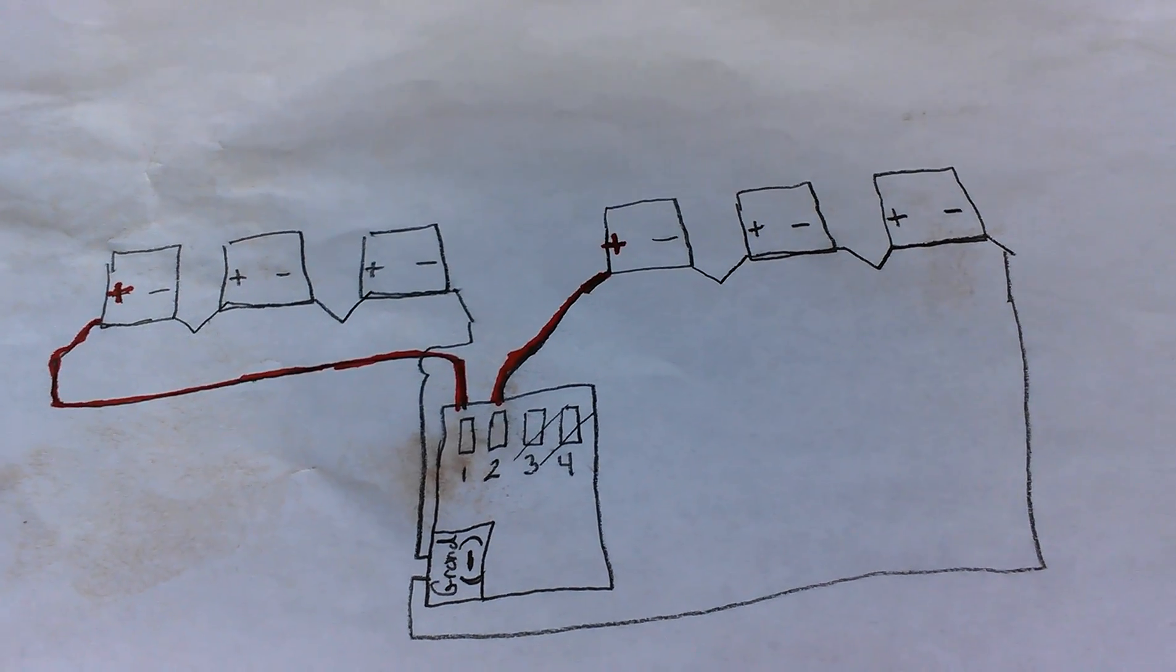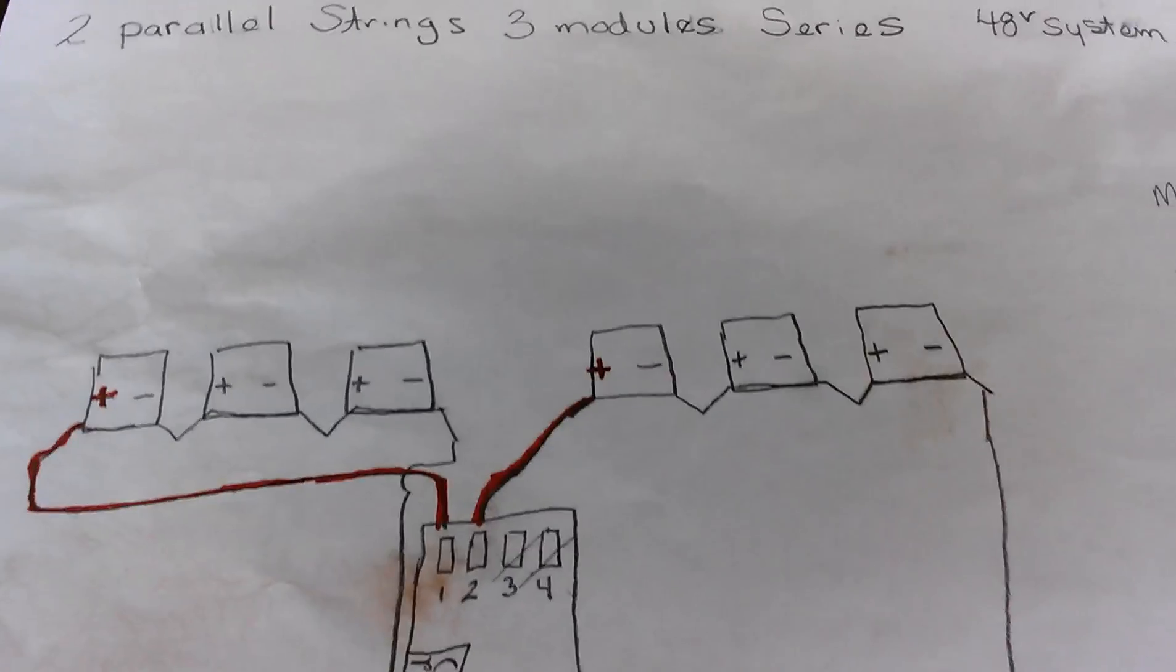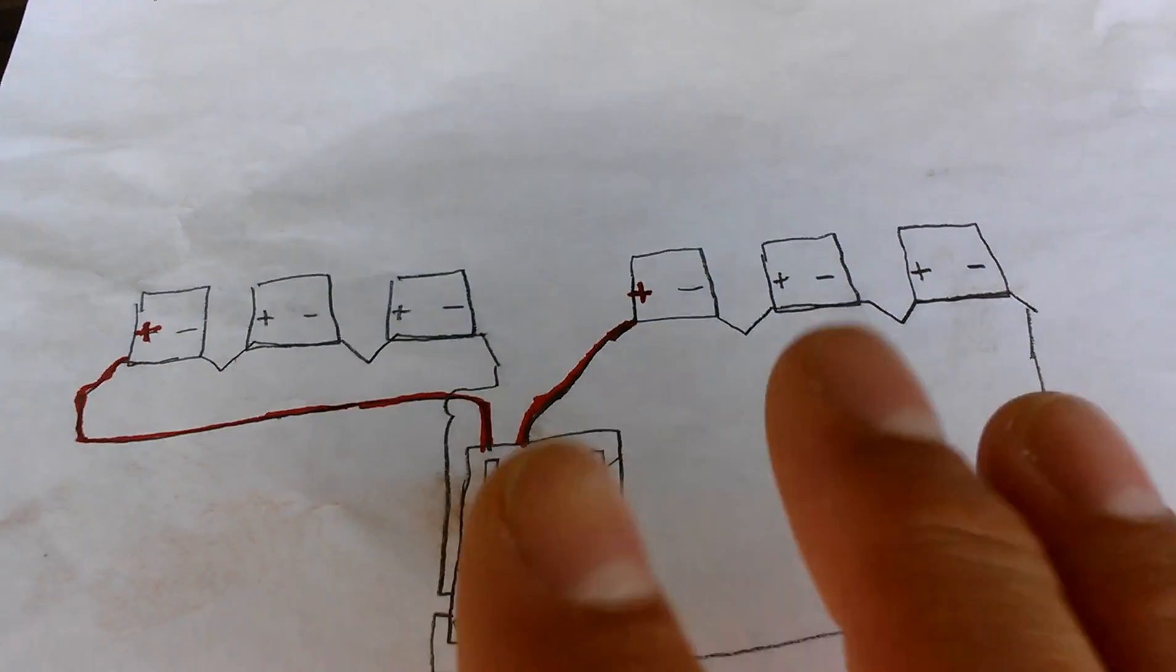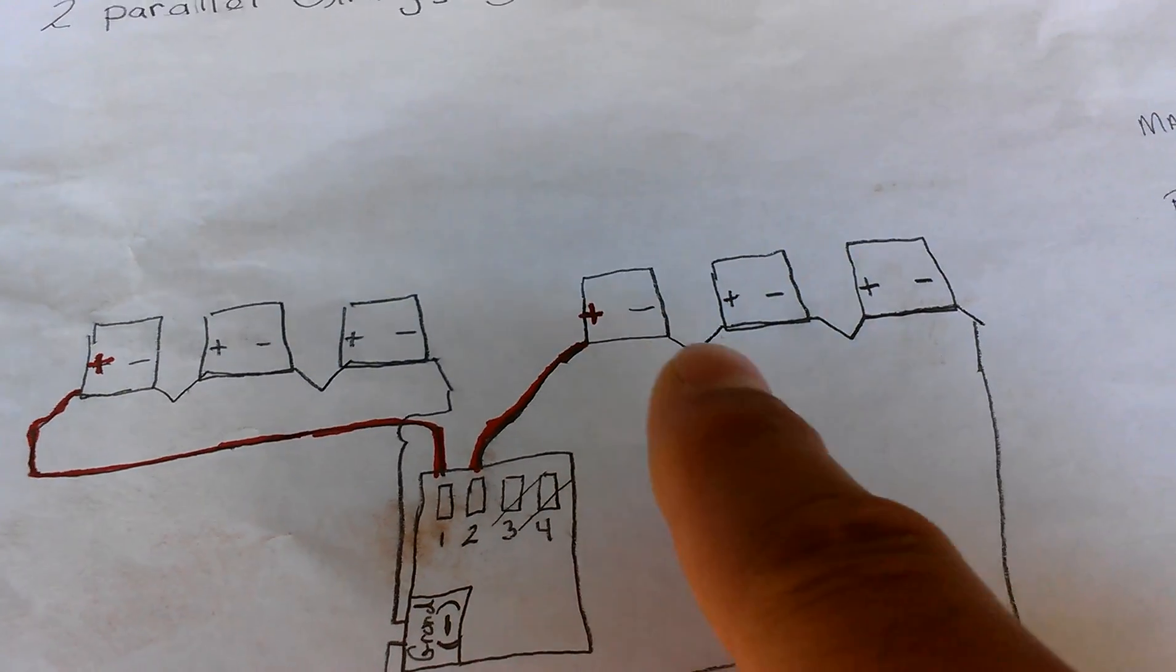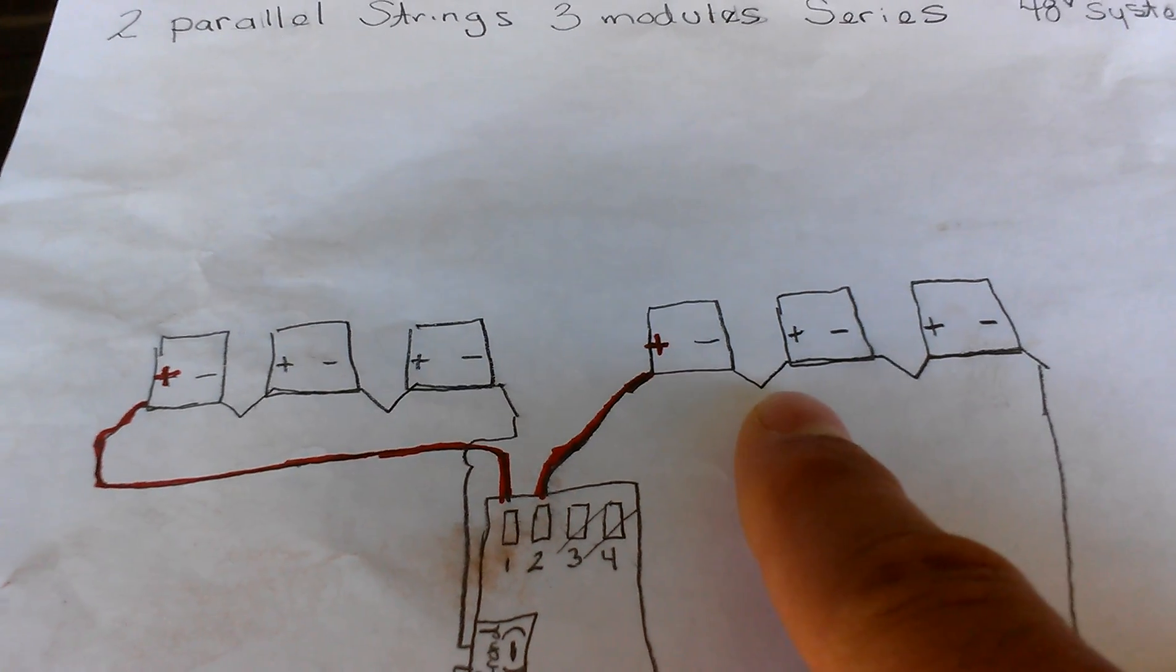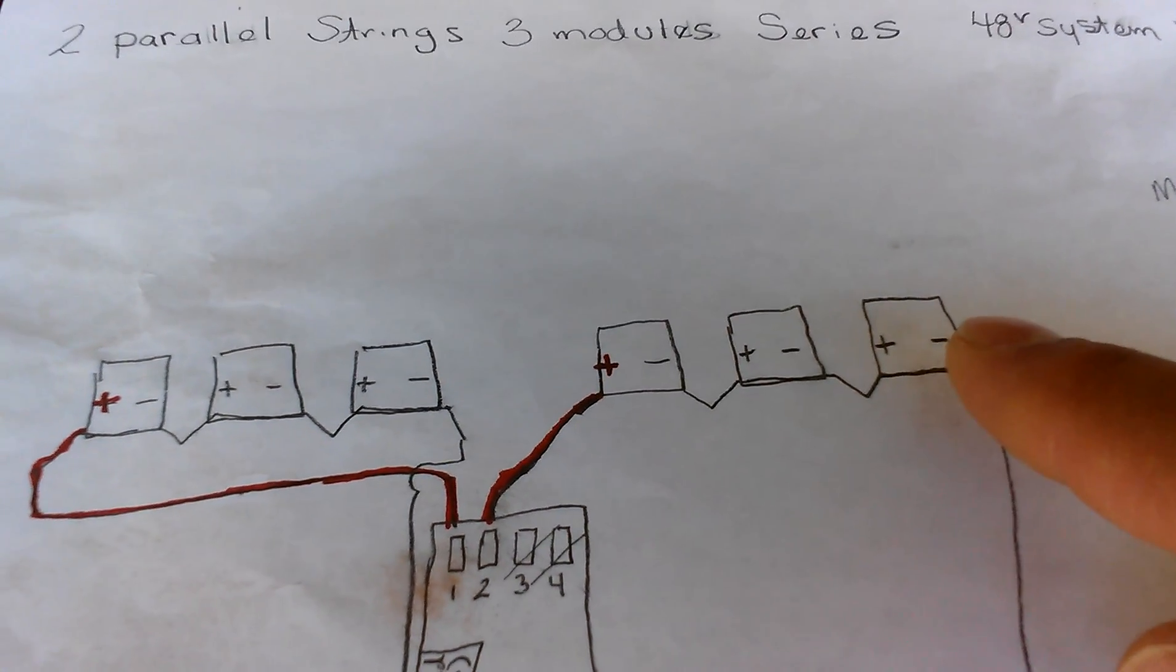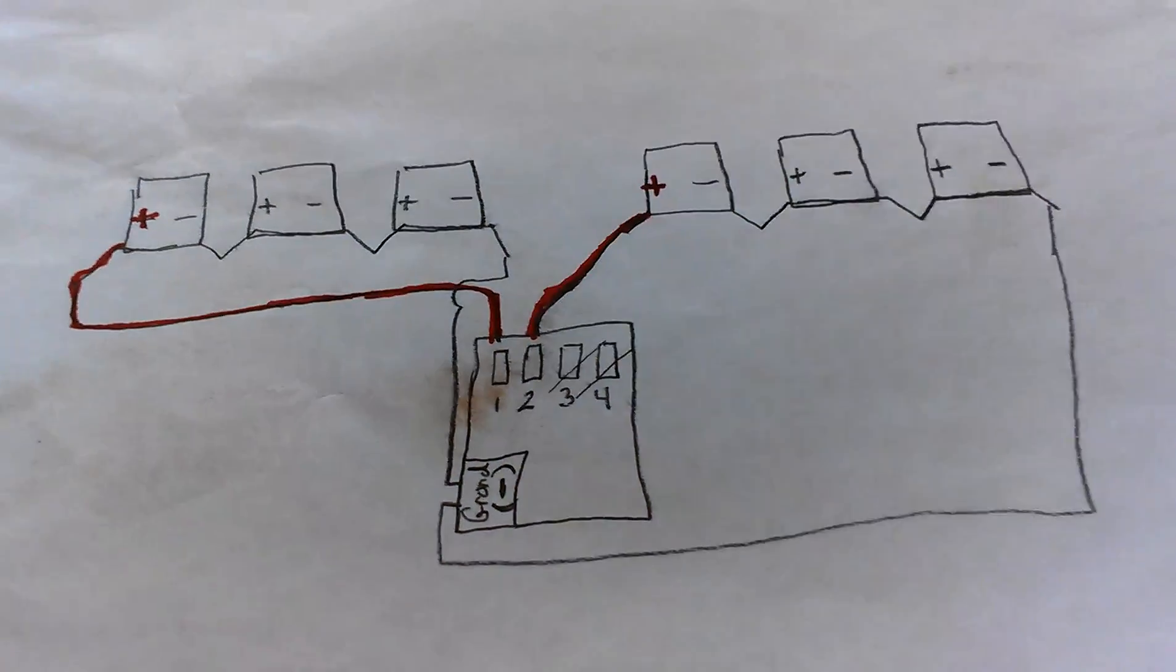Here's the other three mods in series, so it's two strings in parallel - two times three is six. I have the other one dropping down to number two, same thing positive to negative. At the end we have the negative coming over here into the ground.